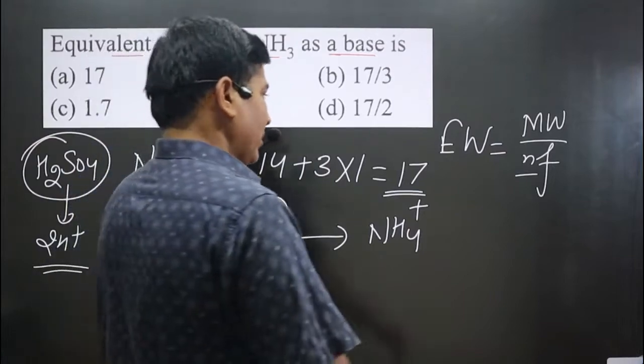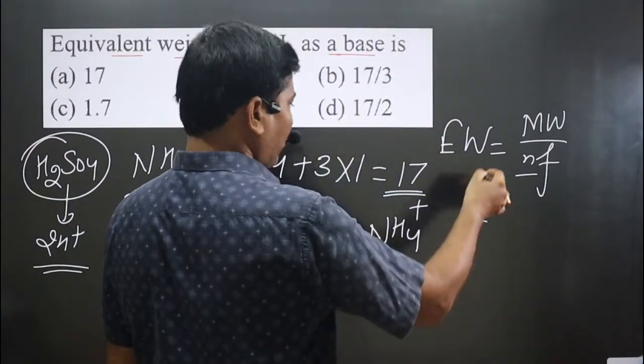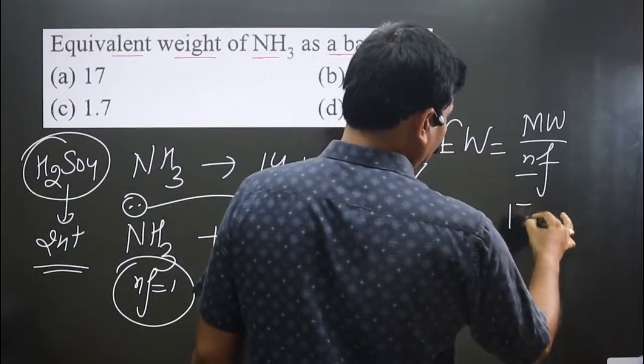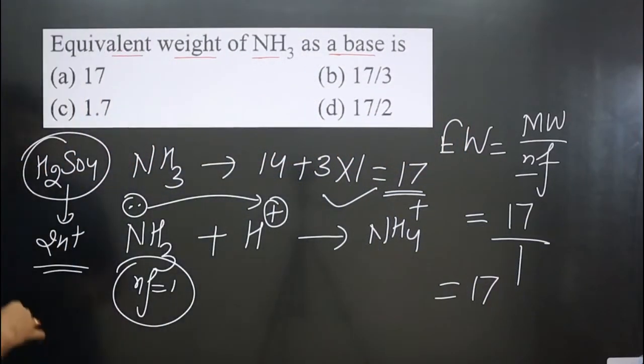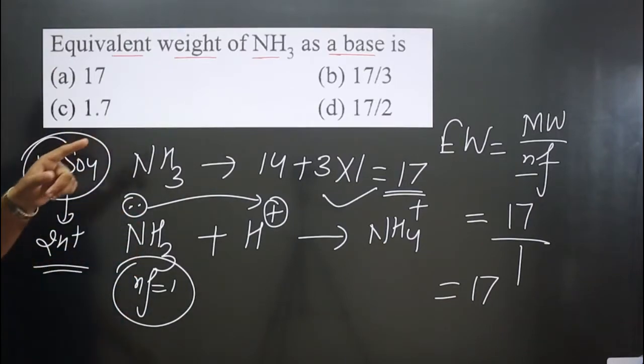Now plug in the values in the formula: molecular weight is 17, n factor value is 1, so we get 17. Looking at the options given, we can see option (a) is 17.